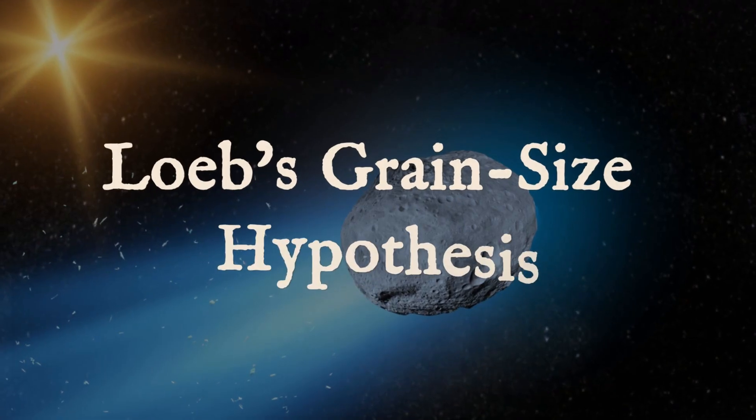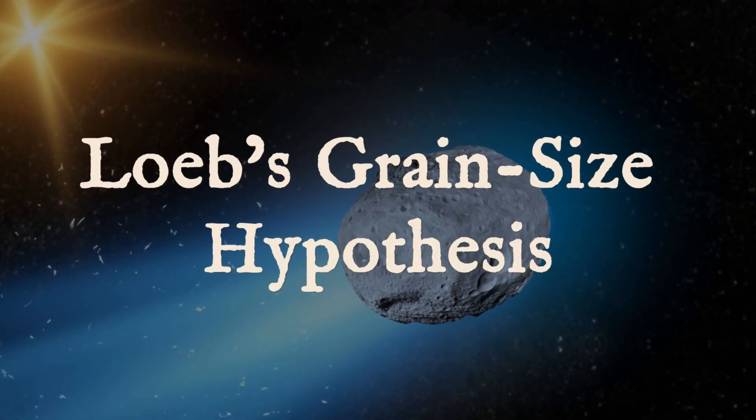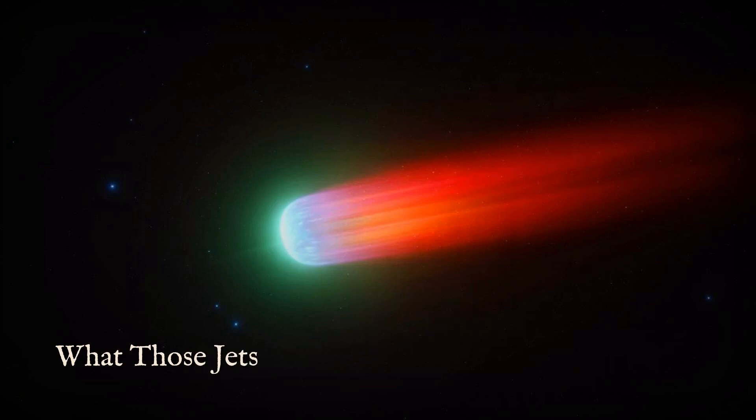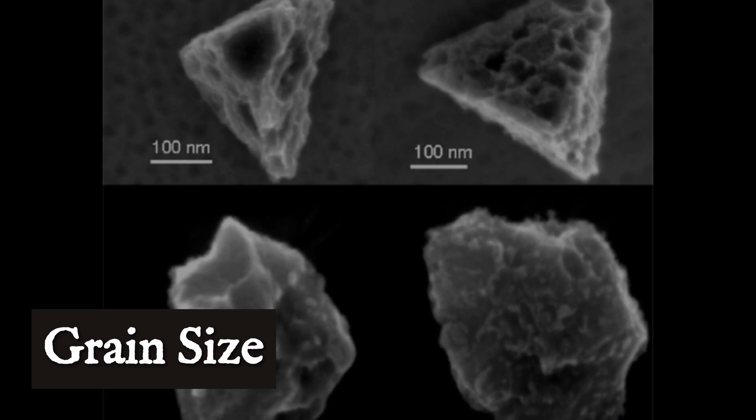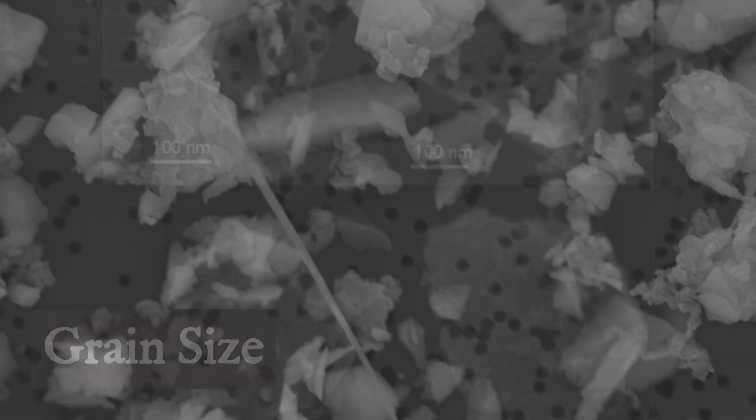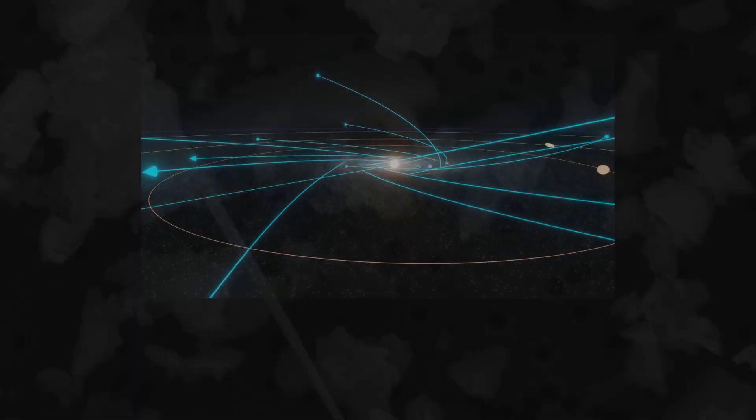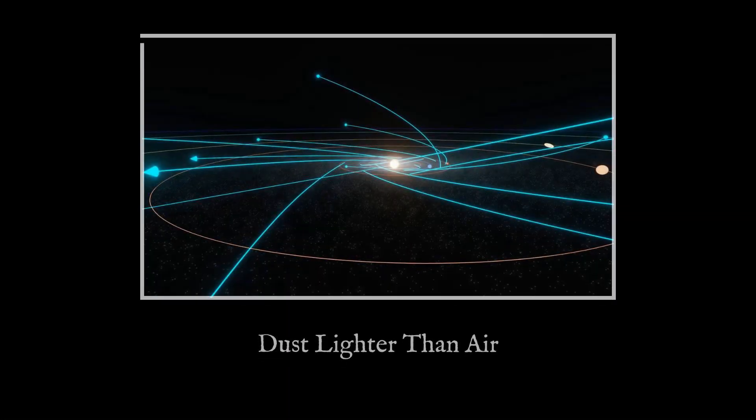When a comet nears the sun, sunlight heats its surface, causing ices to vaporize and jets of gas to erupt. For 3i/Atlas, the story hinges on what those jets carry into space. The key lies in the size of the dust grains that get swept up. Smaller grains, measuring less than a micron, are so lightweight that sunlight itself pushes them away almost instantly. This is due to the radiation pressure parameter, called beta.